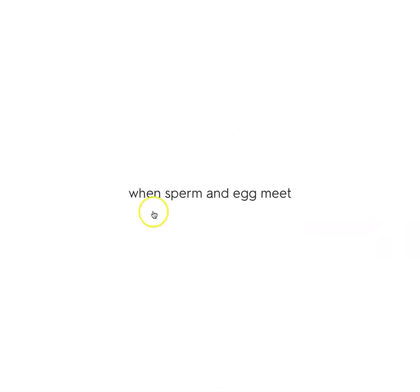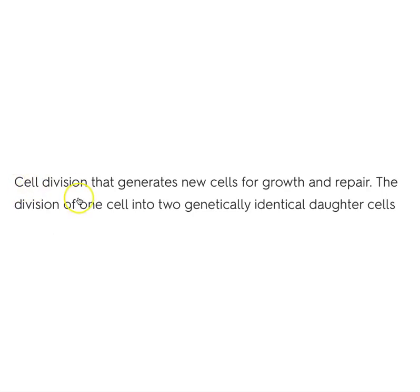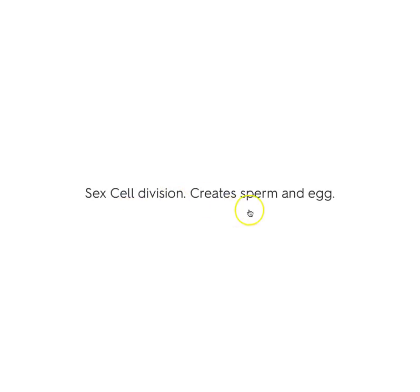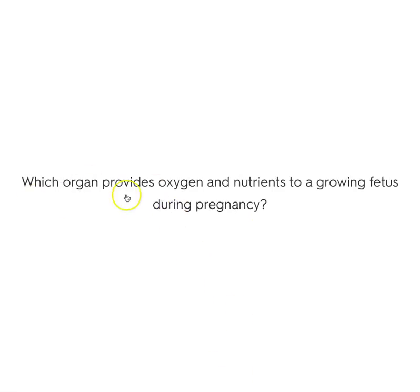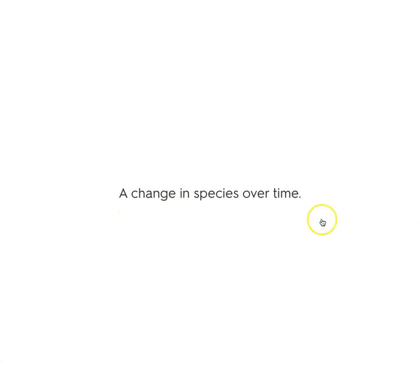What is fertilization? When sperm and egg meet. Where does fertilization take place? In the fallopian tube of the female reproductive system. What is mitosis? Cell division for growth and repair. What is meiosis? Sex cell division — creates sperm and egg. What organ provides oxygen and nutrients to a growing fetus during pregnancy? The placenta, where diffusion takes place. What is evolution? A change in species over time.